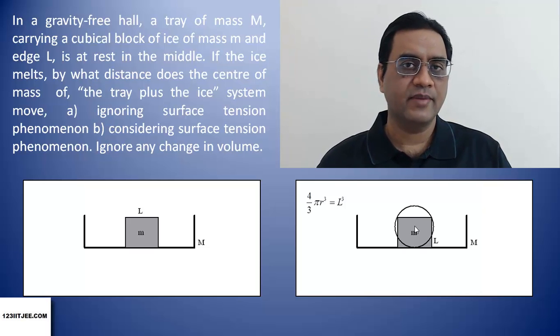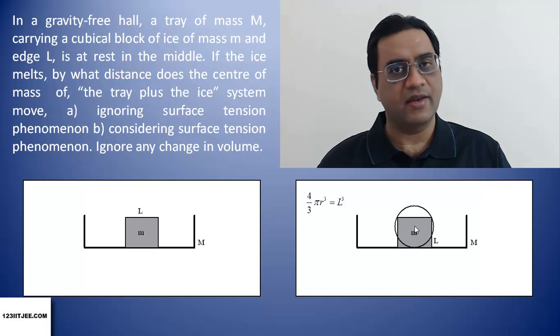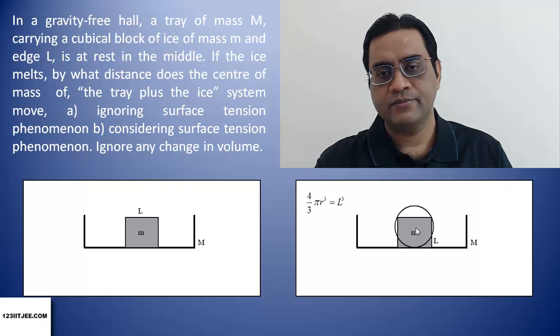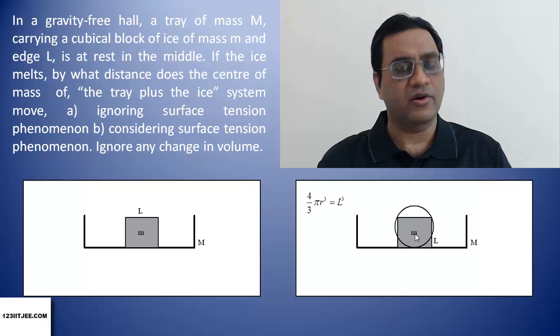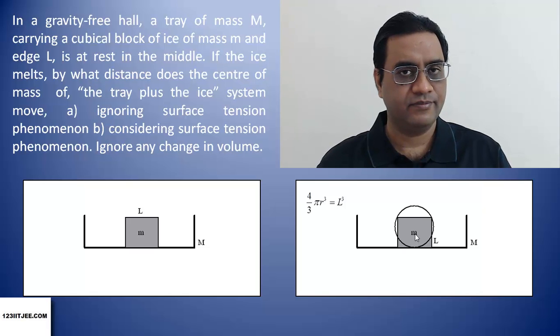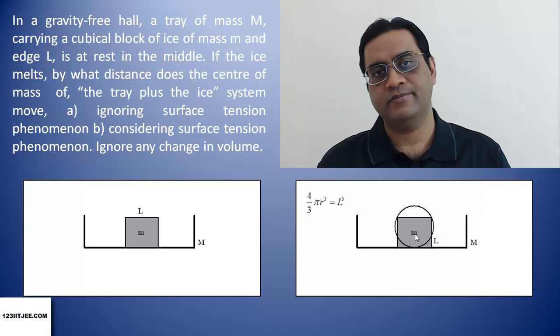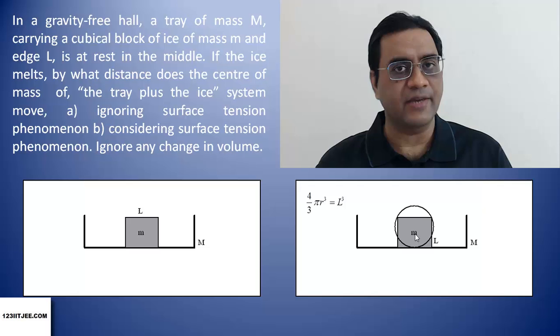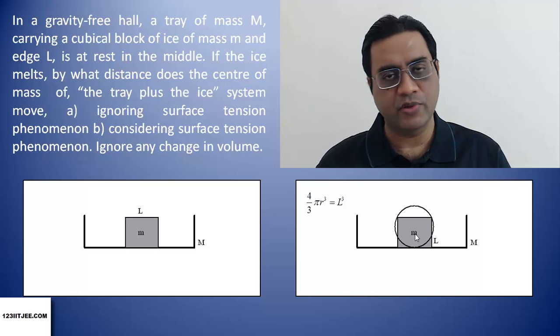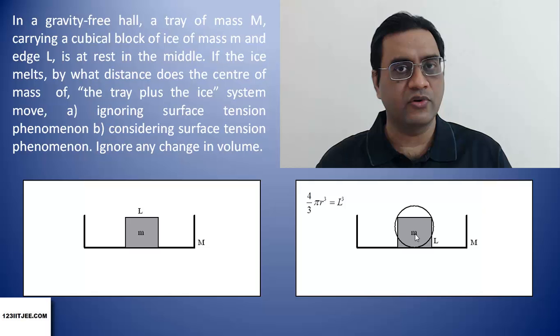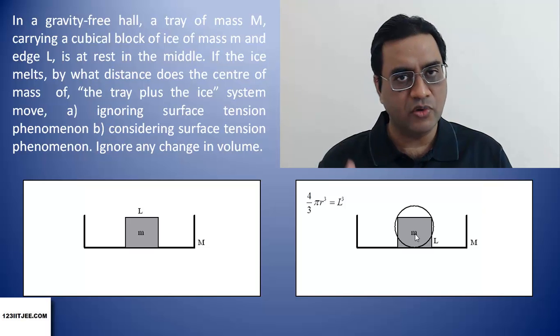So, now 0.6 L and earlier 0.5 L. This means that the center of the sphere is above the center of the block. But center of mass for the whole system of the block plus tray cannot change its position. And therefore, in this case, when surface tension is being considered, the tray must move down.